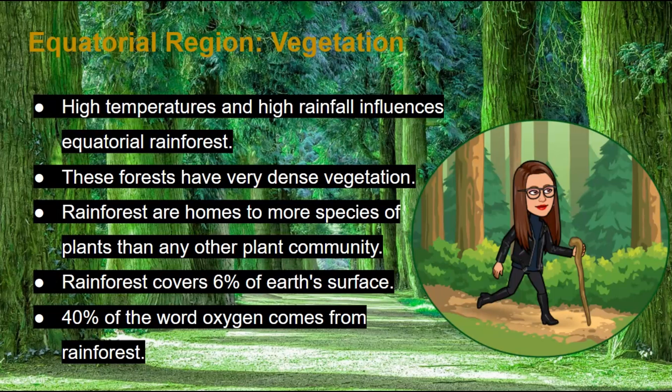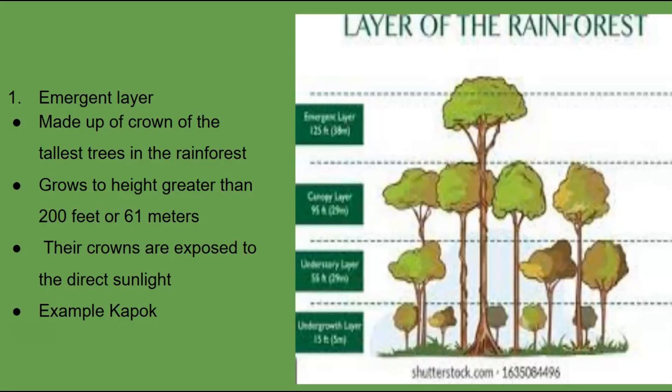In the equatorial region, there are many types of vegetation. Due to the high temperatures and heavy rainfall, they have forests with dense vegetation. The equatorial region is basically home to many rainforests, and these rainforests are home to more species of plants than any other plant community in the world. Shockingly, the rainforest only covers 6% of the Earth's surface, yet 40% of the world's oxygen comes from the rainforests.